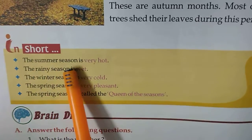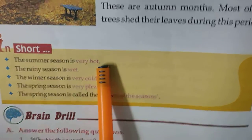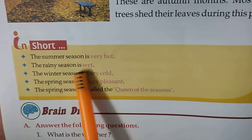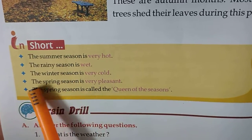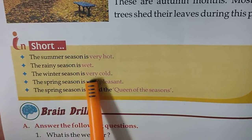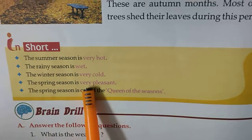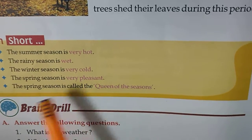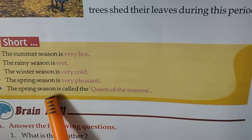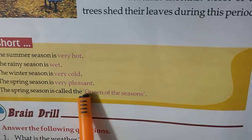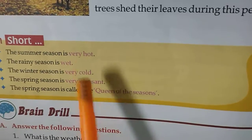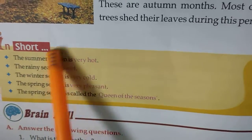In short: the summer season is very hot, the rainy season is wet, the winter season is very cold, and the spring season is very pleasant. The spring season is called the queen of the seasons. Children, for MCQ, you will learn these points.